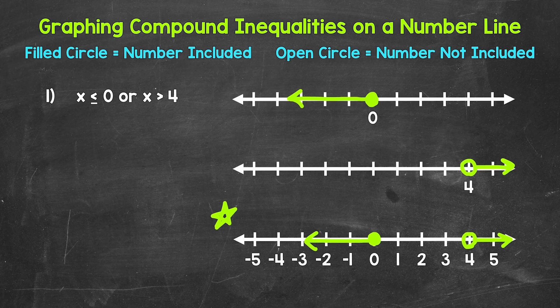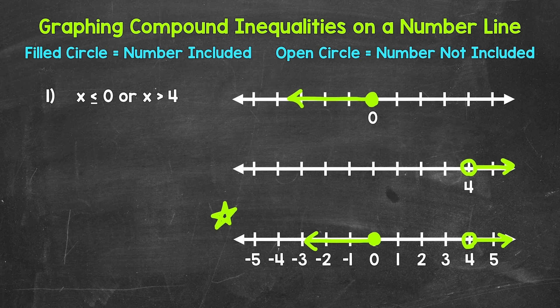As far as solutions, let's try a couple of numbers. Will two work for x? Is two less than or equal to zero or greater than four? No, so two is not a solution. How about seven? Is seven less than or equal to zero or greater than four? Yes — seven is greater than four, so seven is a solution. Anything less than or equal to zero will work, or anything greater than four will work, and we can see that represented on the number line.